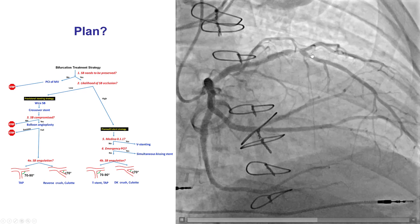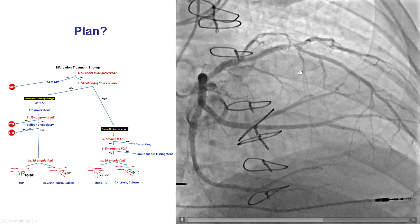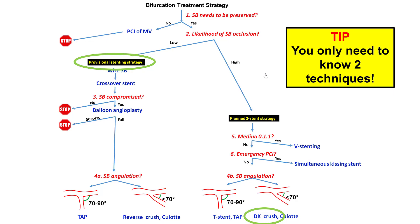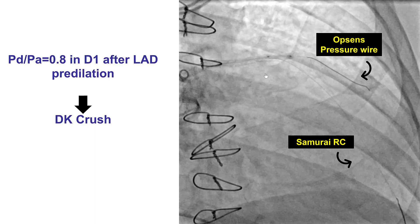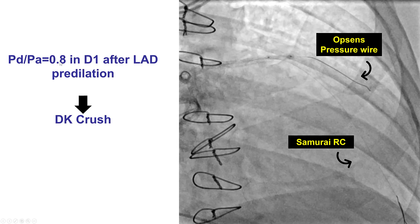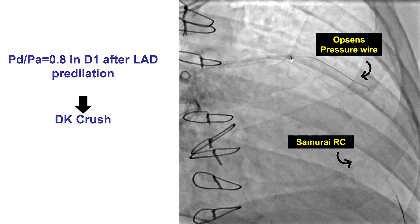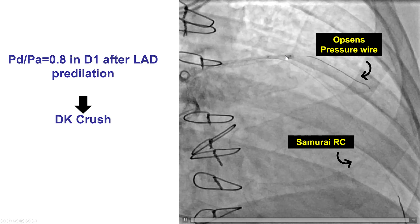In this particular case, preservation is definitely needed — this is a large branch. Regarding likelihood of side branch occlusion, this is hard to tell; there doesn't seem to be much disease at the origin of the side branch, however the angulation is a little narrow. We inserted a guide wire into the side branch — it was a pressure wire — predilated the LAD, and then performed a Pd/Pa pressure measurement, which was 0.8 after LAD predilation. Although this is not the optimal test, because a positive Pd/Pa with a cutoff of 0.91 could be due to residual disease in the LAD, a decision was made to do two-stenting.